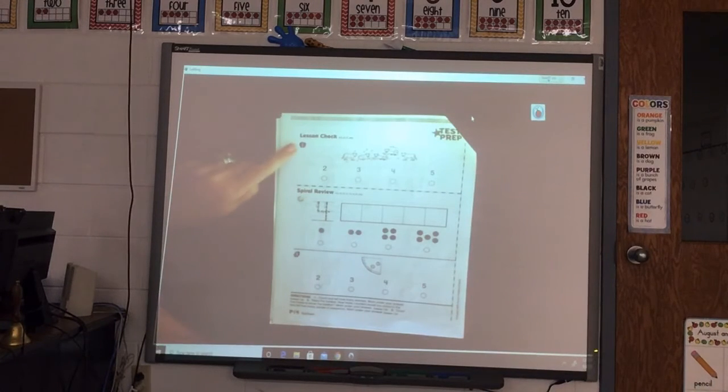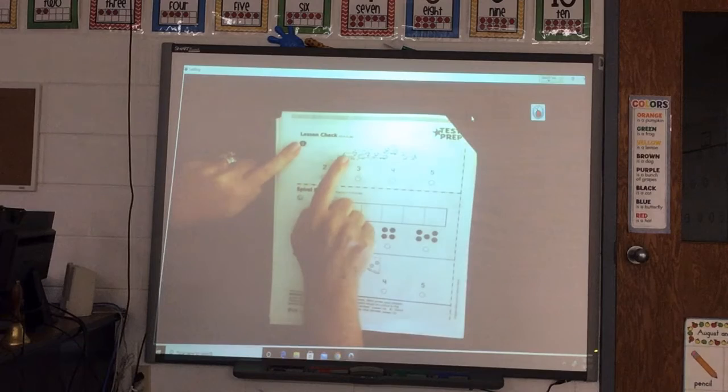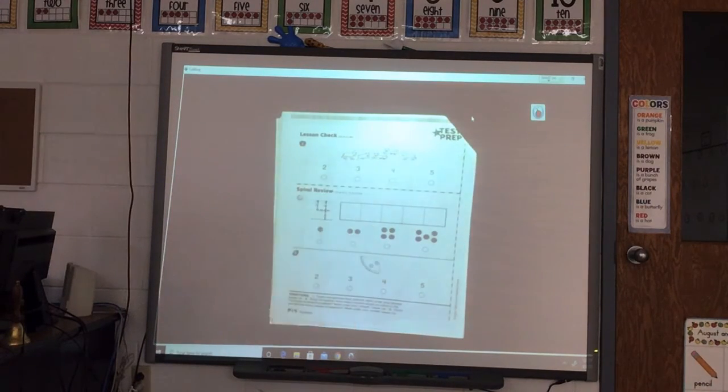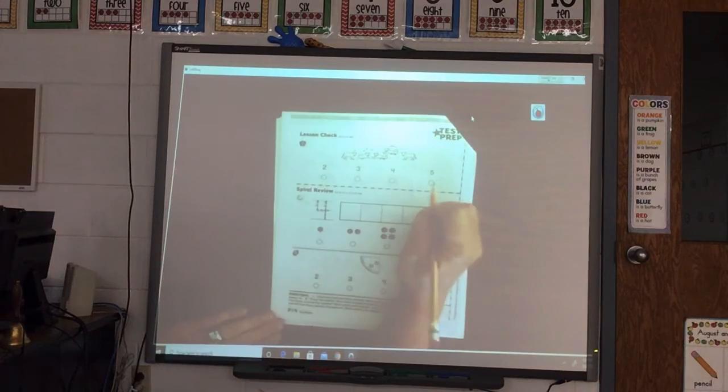Alright, up here by the apple they want us to count these animals and see how many. So it's best to touch each one while you are counting so you don't lose your place. 1, 2, 3, 4, 5. Find the 5 and mark your answer.